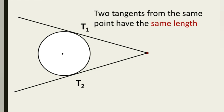Rule number 5: two tangents from the same point have the same length. A tangent is basically a line drawn to touch a circle at exactly one point only. In our diagram we have two tangents, T1 and T2, meeting at a common point. The distance from the point where T1 touches the circle to the common point equals the distance from where T2 touches the circle to the common point. So if one is 10 centimeters, the other is also 10 centimeters.